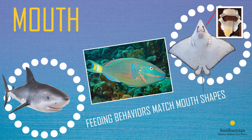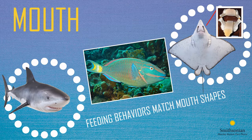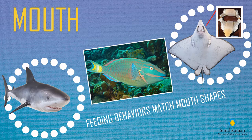Fish with sharp, pointy teeth, such as this shark, tend to eat other animals. This parrotfish has a beak-like mouth to scrape algae off of coral reefs. This stingray, on the other hand, suctions worms and shelled animals from the seafloor like a vacuum. Stingrays use a pair of jaw teeth — flat plates — that crush the shells of prey, making it easier to get to a softer center.